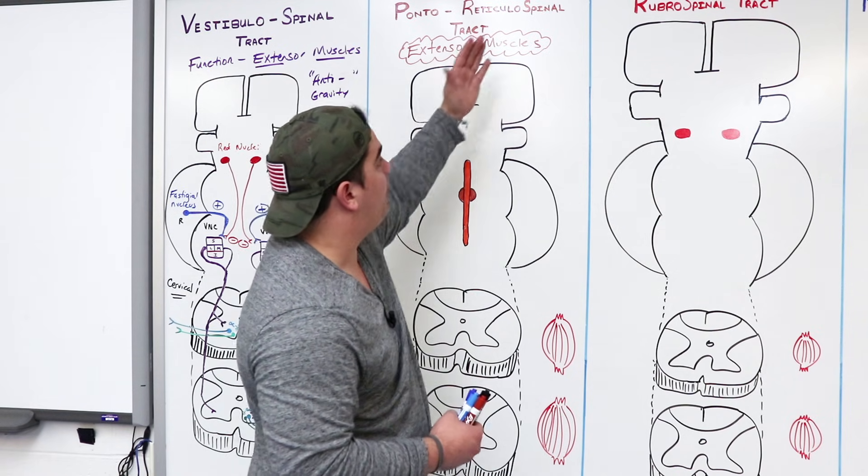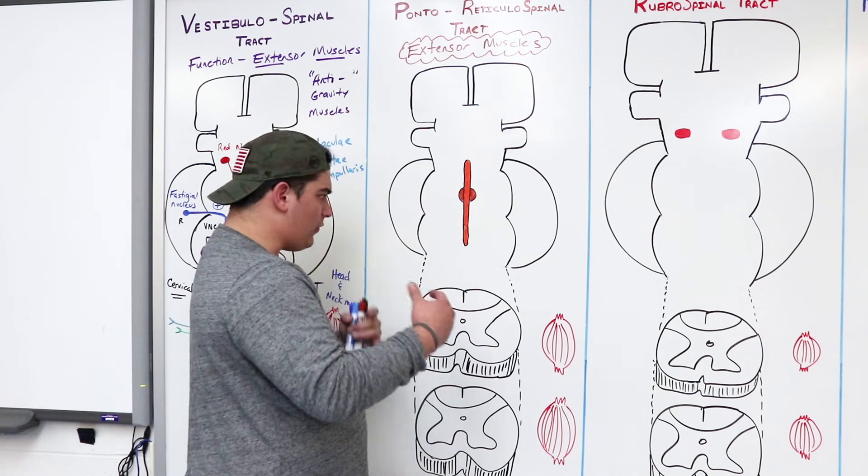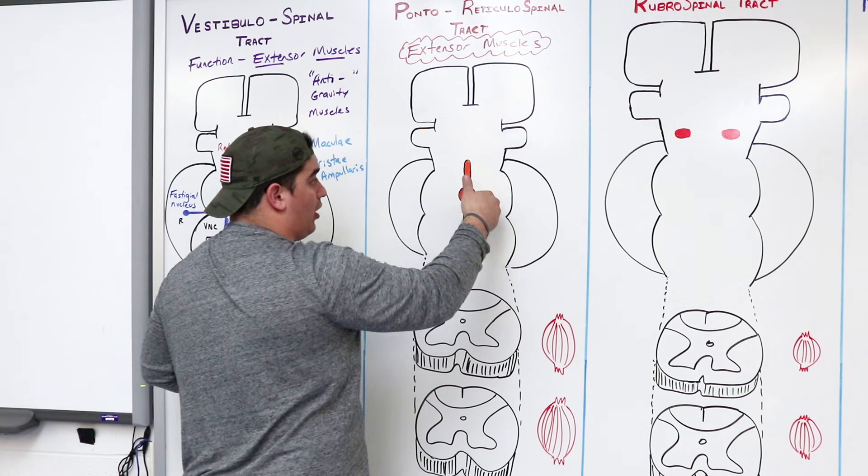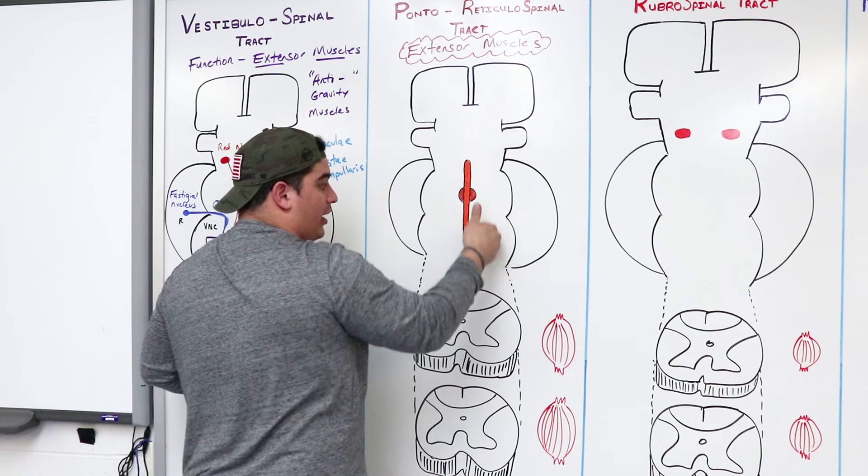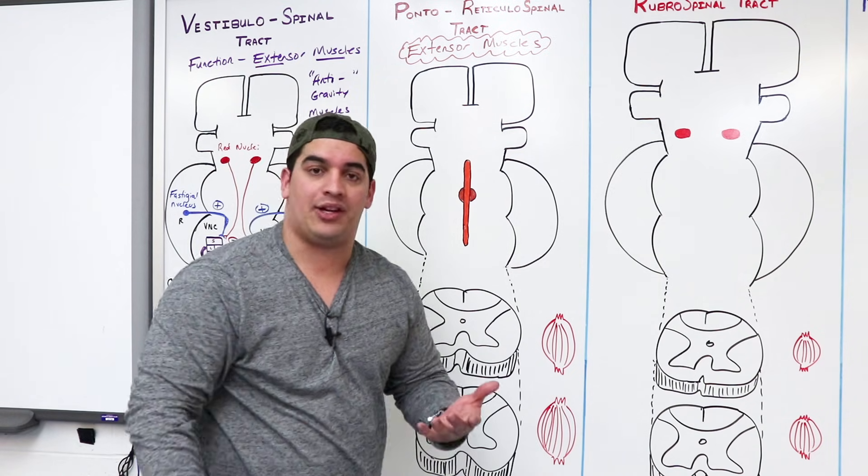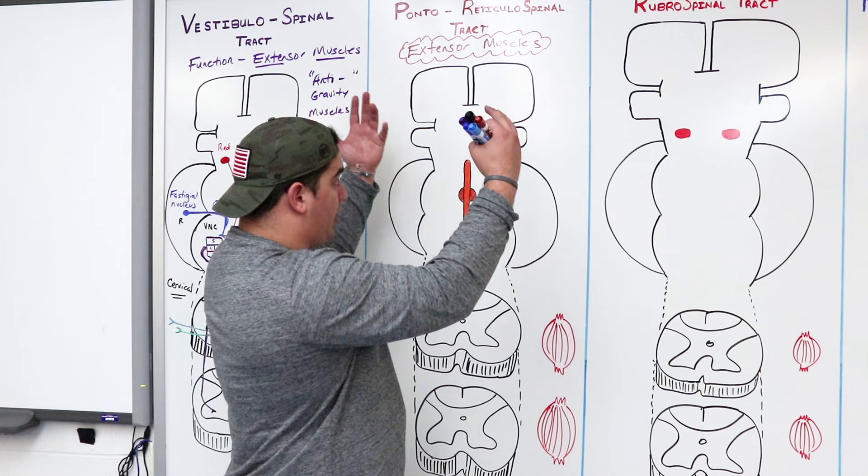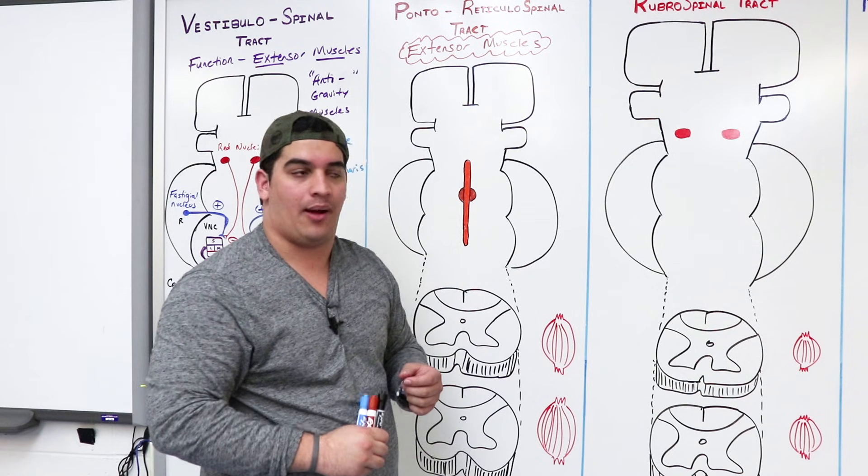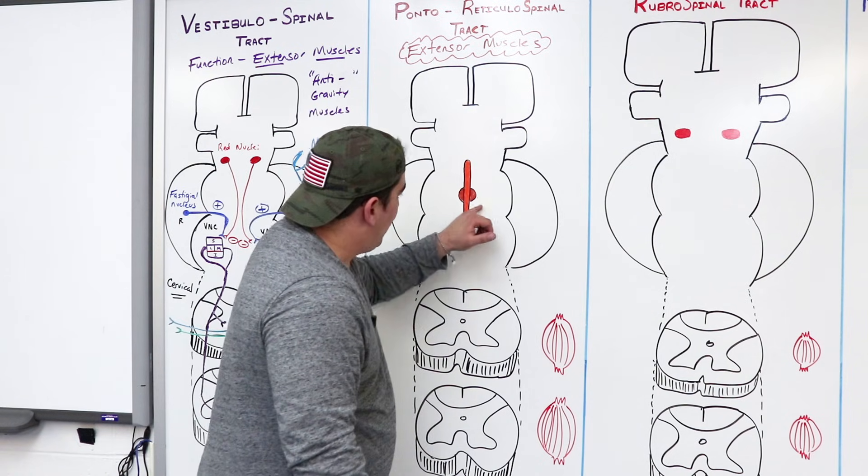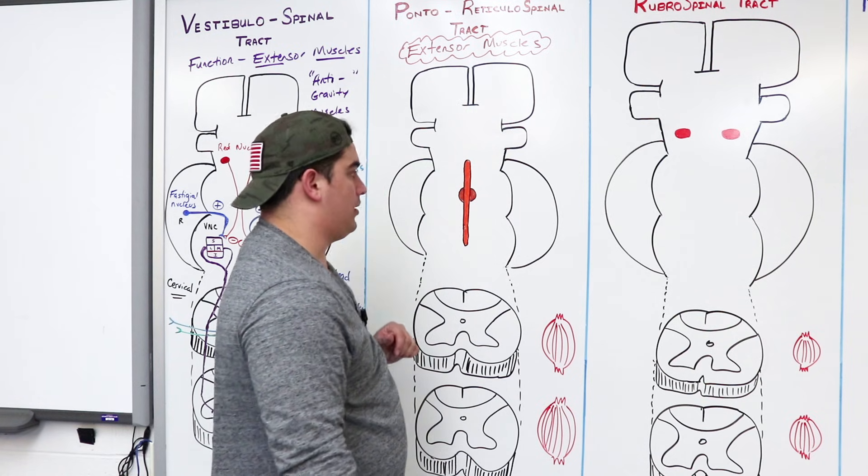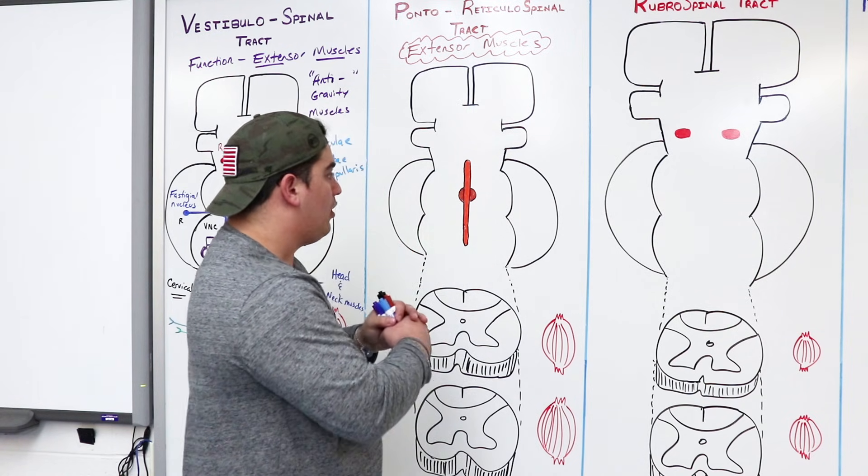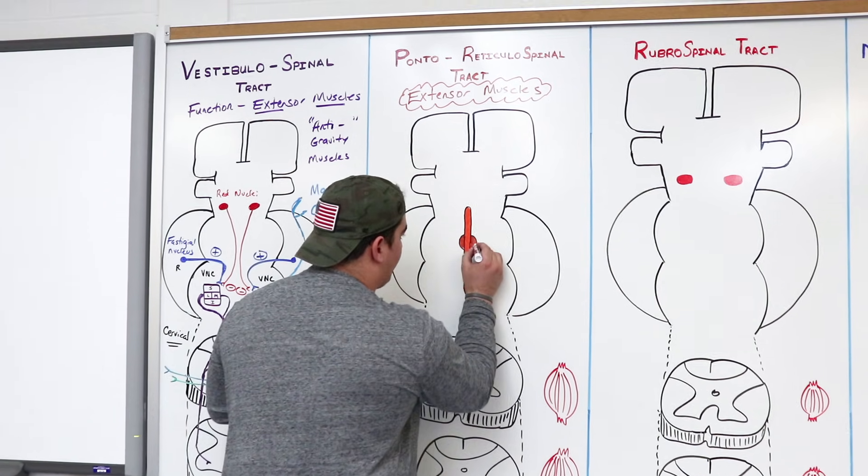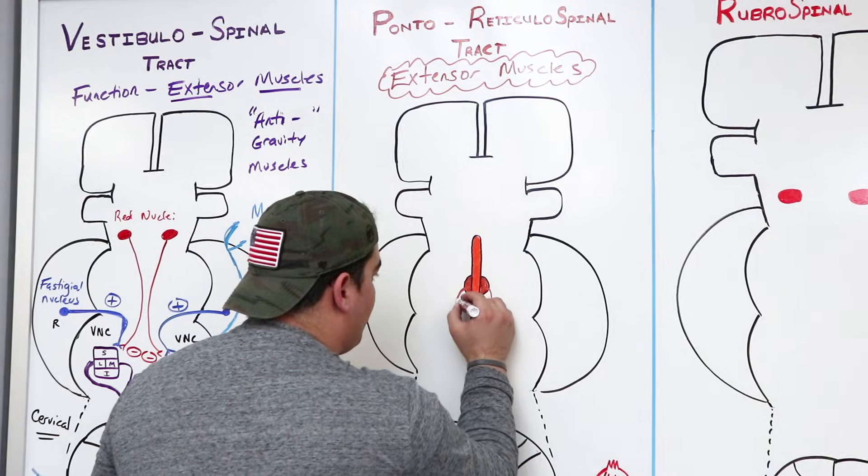But now, Ponto-Reticulospinal, if you remember, I talked about it in a bunch of different videos, you have a kind of a mixture of gray and white matter structure that extends all the way from the midbrain down to the medulla, called the reticular formation. It's important of basically alerting our cerebral cortex and arousing it, letting it know what's the most important stimulus at that point in time. But there's some special nuclei that are located within the pons, that are important for this actual descending tract.